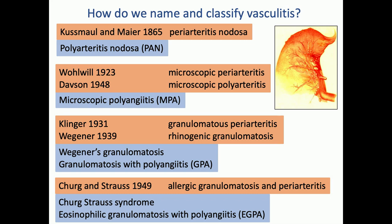Klinger in the early 1930s described something he called granulomatous periarteritis, followed closely by Wegener, who described rhinogenic granulomatosis. These were almost certainly the same disease, initially called Wegener's granulomatosis and nowadays known as GPA. And finally, Churg-Strauss in 1949 described allergic granulomatosis and periarteritis, later known as Churg-Strauss syndrome and then eGPA.